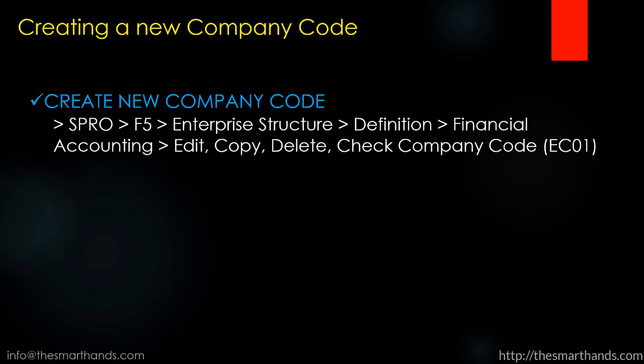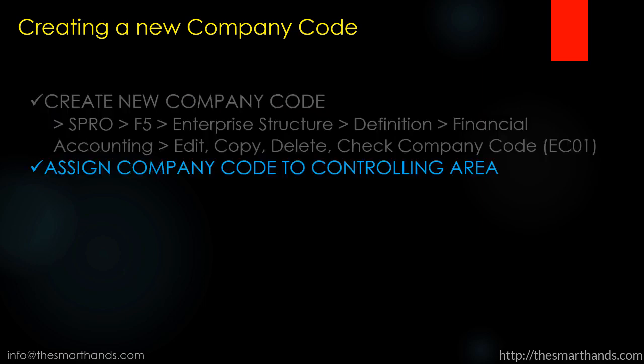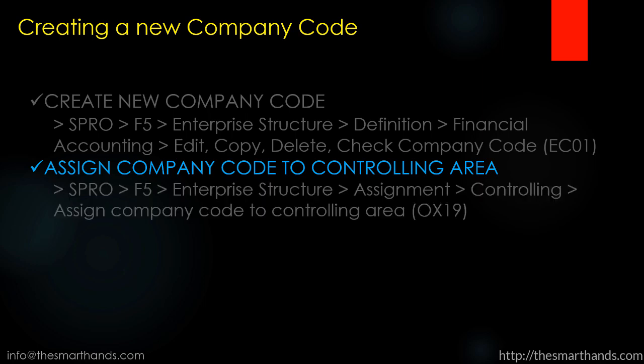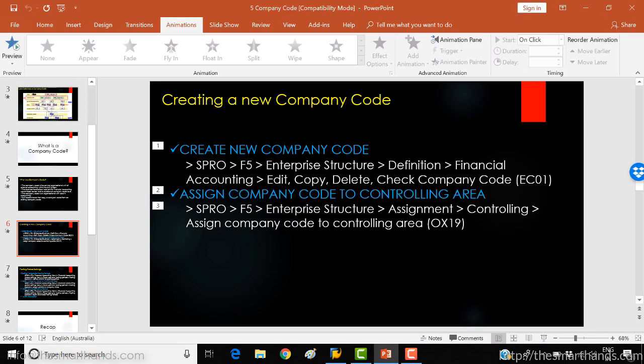So creating a new company code — these are the steps. First, you need to create a company code using the menu path, or you can straight away use the transaction EC01. Then the second step is you need to assign the company code to a controlling area using transaction OX19. So let's start some customizing.